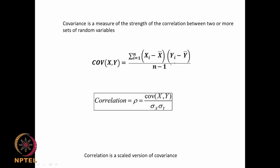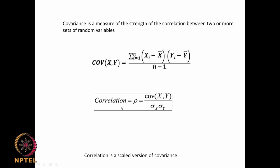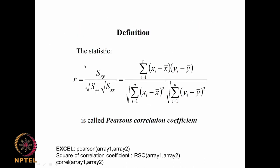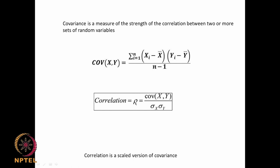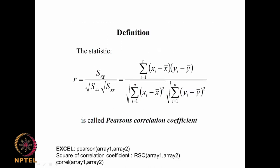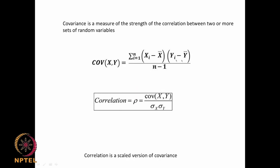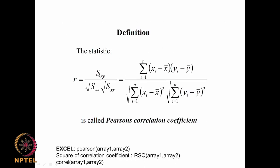Otherwise, Xi minus X-bar times Yi minus Y-bar can produce practically huge numbers, but once you divide by sigma_X and sigma_Y, the result is constrained between 0 and 1. Generally, correlation is what is examined. The Pearson correlation coefficient is also represented as S_XY, meaning summation of (Xi minus X-bar) times (Yi minus Y-bar), where X-bar and Y-bar are the respective means.